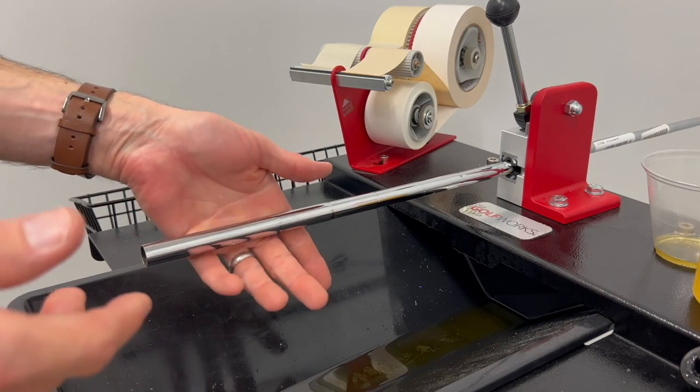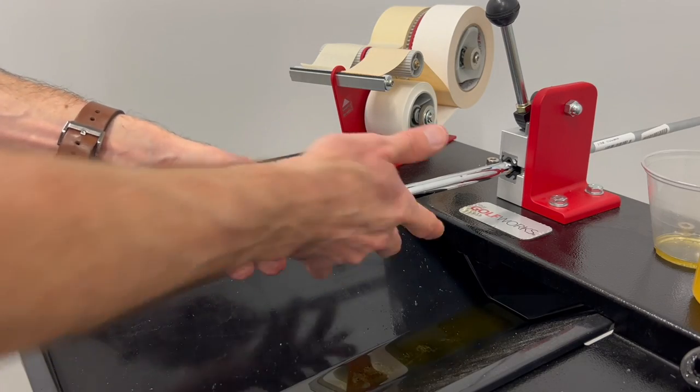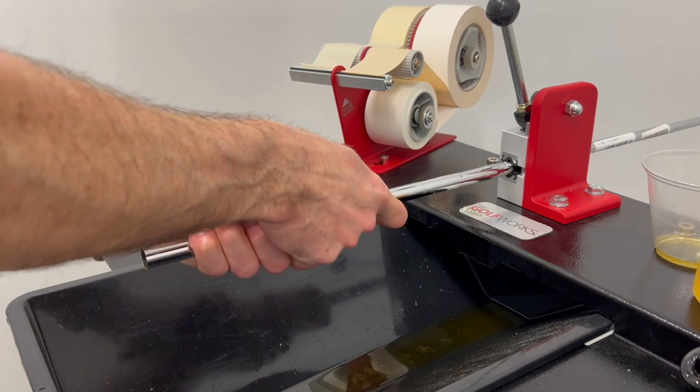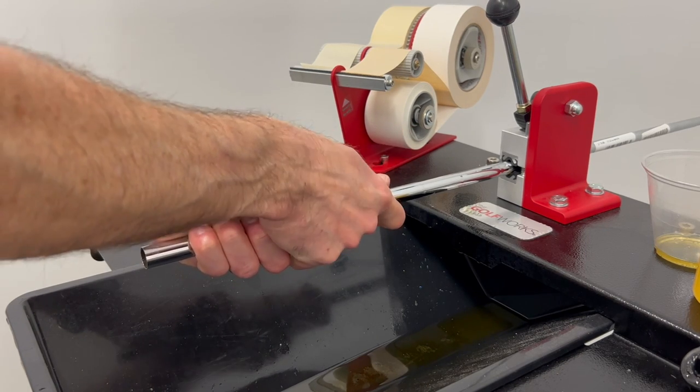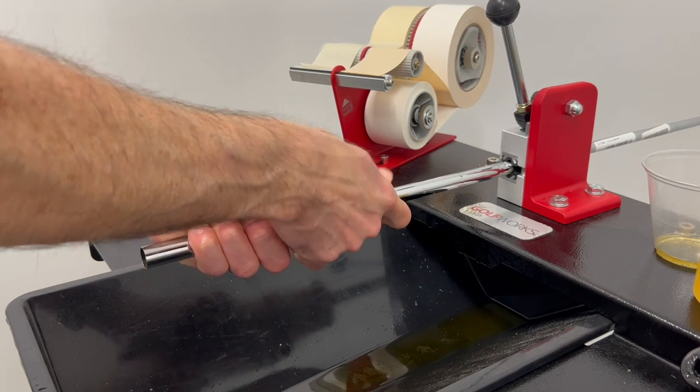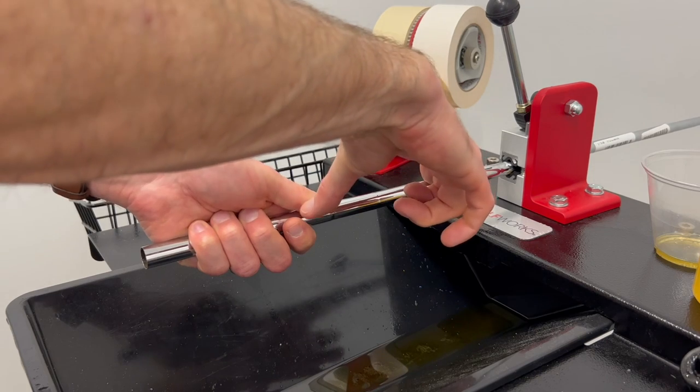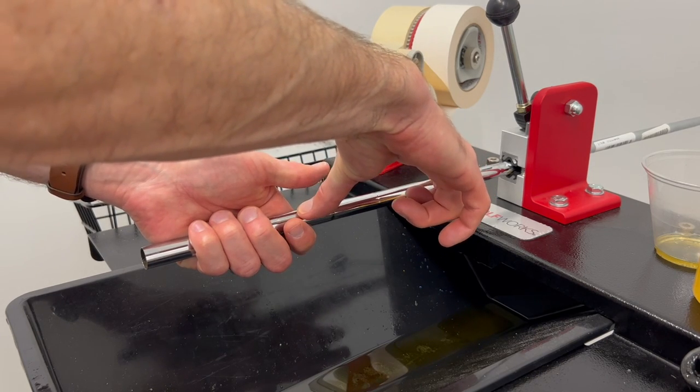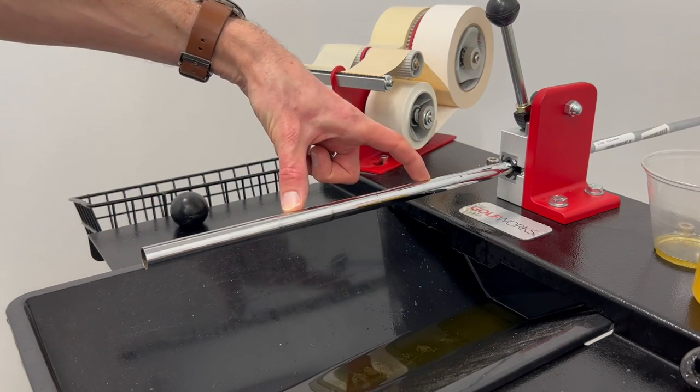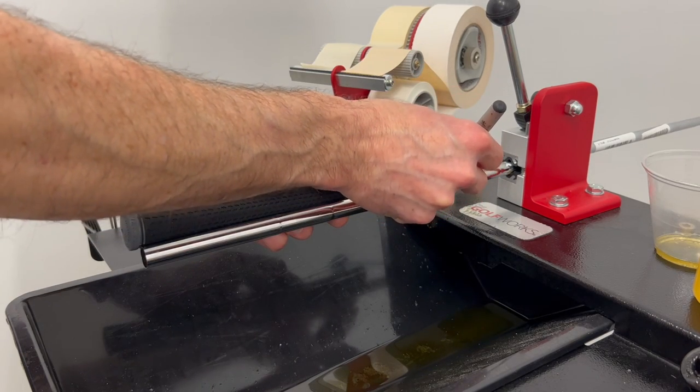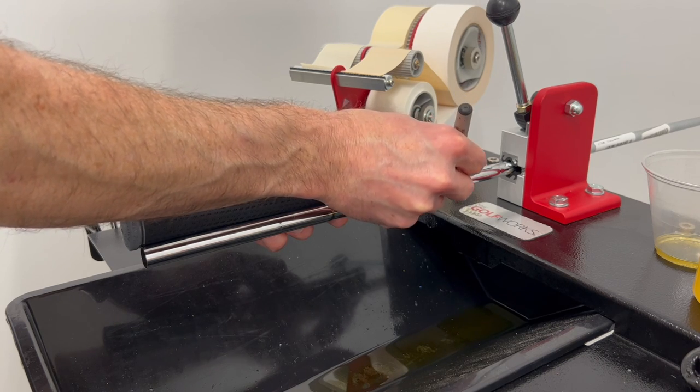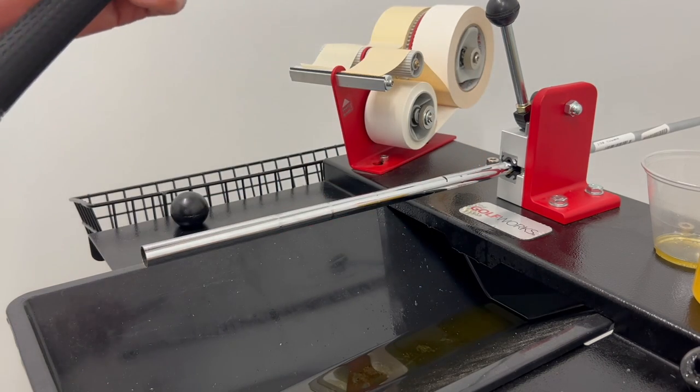First thing I like to do is just kind of take a grip on the shaft like I would be holding it and just get an idea of where my lower hand is going to be sitting on the shaft. Okay, so right around here. So this is really the area kind of here to here where we're going to focus on building up that shaft and we're going to make a line just down from the end of the grip about a quarter of an inch or so just like that and that's where our tape is going to start.